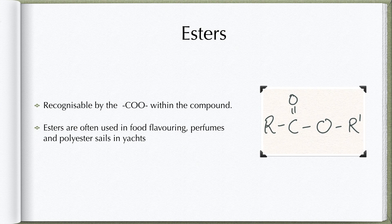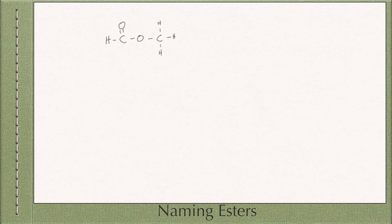Esters are similar to carboxylic acids, except their functional group — a carbon double-bonded to oxygen — is within the compound. Esters are used as perfumes and as food flavourings. Esters are a little bit trickier to name. You are given a structure and asked to name the ester. Step 1: put a dotted line through the carbon atom that is singly bonded to the oxygen — this will separate both sides to help with the naming. Step 2: count the number of carbons on the side with no oxygens; this will be the alkyl group. In this case it is methyl, because there is one carbon bonded to three hydrogens.